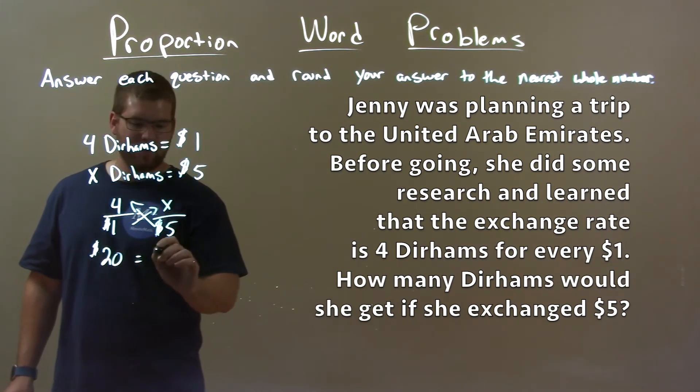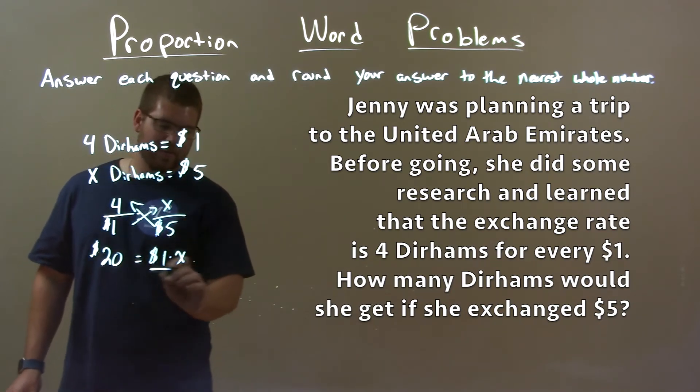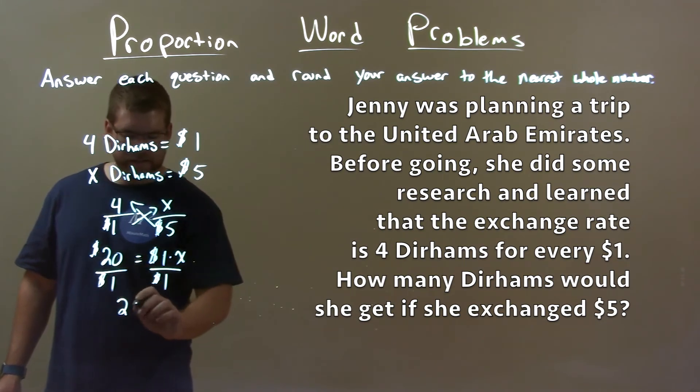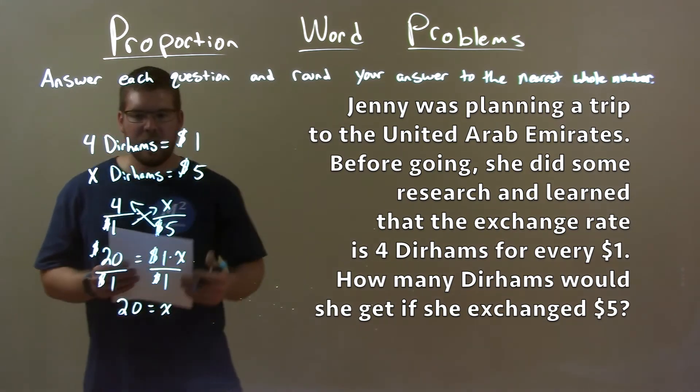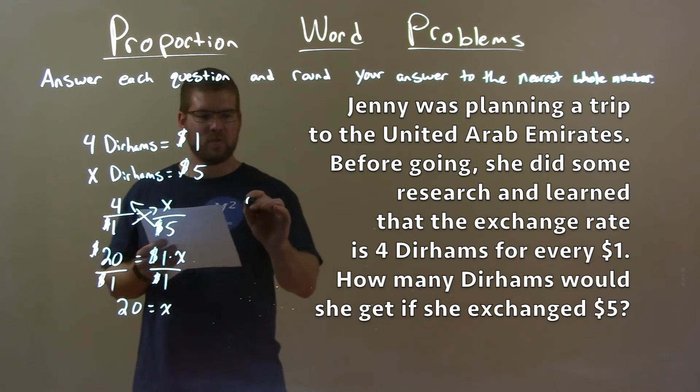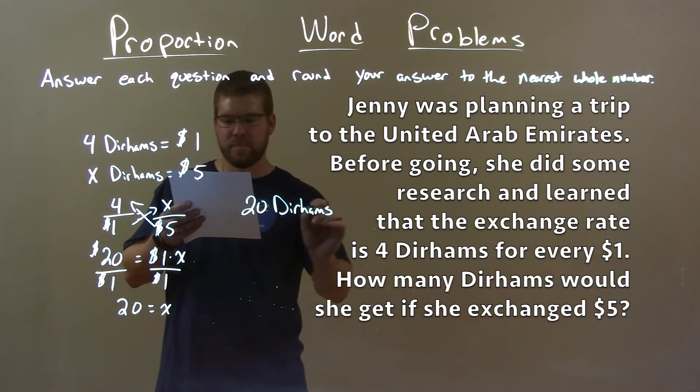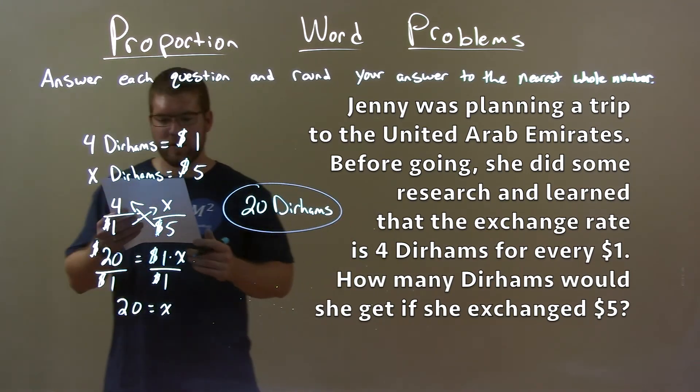And we have $1 times x. Don't really need to do that, but we divide by $1 on both sides to get x by itself. And we're left with 20 is equal to x. And so, we have a final answer of 20 dirhams we will receive if we exchanged it with $5.